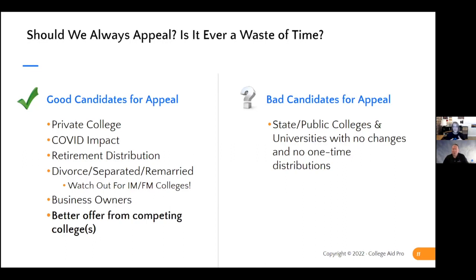If you have competing offers — and Joe referenced this earlier — that's why having schools on your list that strategically compete makes sense. If you build a college list strategically saying maybe Johnny's not going to go to that school, but we know there's going to be a nice package and that school competes with another school he loves, it might make sense to throw it on the list. You might pay $60 to apply but end up getting thousands of dollars more if you appeal.